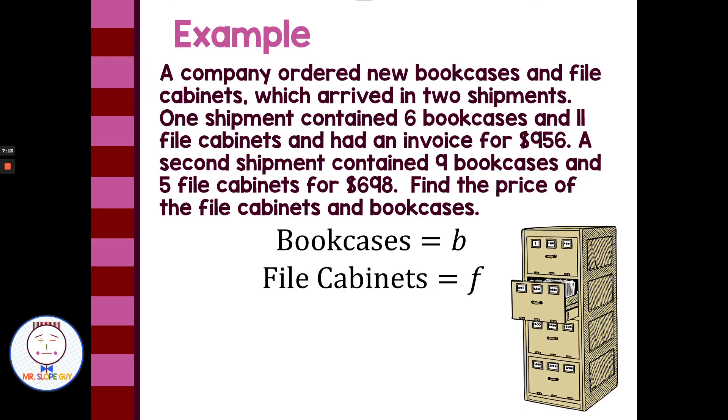This is a great example of not having a counting equation and a value equation, because this looks like we have two kind of value equations. Each of our equations can come from each of these two shipments. So if we look at shipment one, one shipment contains six bookcases and 11 filing cabinets and had an invoice of $956. That's everything I need for an equation right there. Six times the bookcases plus 11 times the filing cabinets equals $956. So easy equation: 6B plus 11F equals $956. And then my second equation can come from the second shipment, nine bookcases and five filing cabinets for $698. So I can do 9B plus 5F equals $698.